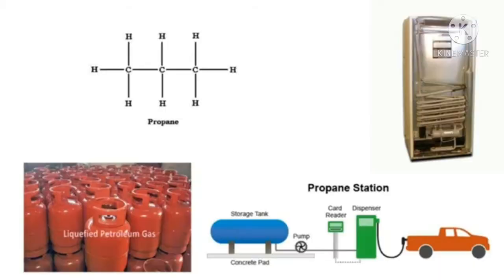Propane is an odorless and highly inflammable gas. It is heavier than air. It is liquefied through pressurization and commonly used as liquefied petroleum gas along with butane. Propane is used as fuel in heating, cooking and vehicles. Propane can also be used as a refrigerant and is used in LPG cylinders. Since it is an odorless gas, any leakage cannot be detected. Hence, a chemical by name mercaptan is mixed with LPG to help in detection of any leakage.